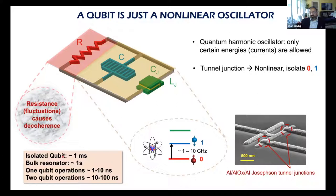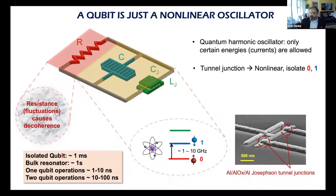To put these numbers in context: a single-qubit rotation takes 1–10 nanoseconds; two-qubit operations take somewhere between 10 and 100 nanoseconds to generate entanglement. This gives a sense of the scale of the problem.